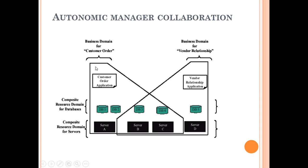This is one polygon, and this is another polygon. These are the common points for this business activity. This is how autonomic manager collaboration takes place.